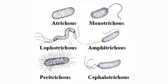The third type is amphitrichous — amphi means both. When a single flagellum is present on both ends of the bacterium, they are said to be amphitrichous. Example: Nitrosomonas. The fourth one is lophotrichous — when a bunch of flagella is present on both ends of the bacterium, those bacteria are said to be lophotrichous. Example: Salmonella.